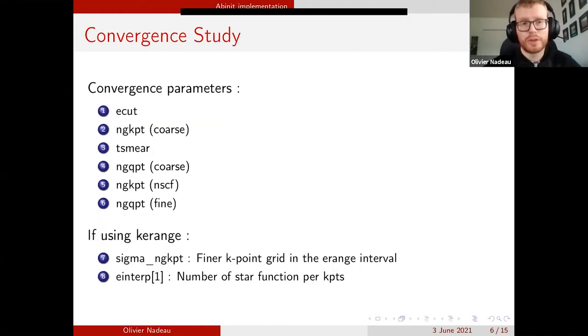So now, to get accurate results using Abinit, we'll need to do some convergence study. First, we'll need to do convergence study on ECUT, on the coarse k-point grid, on T-Smear, on the coarse q-point grid, on the non-self-consistent k-point grid, and on the fine interpolate q-point grid. If we use K-Range, we'll also need to do a convergence study on the sigma grid and on the interpolation method.